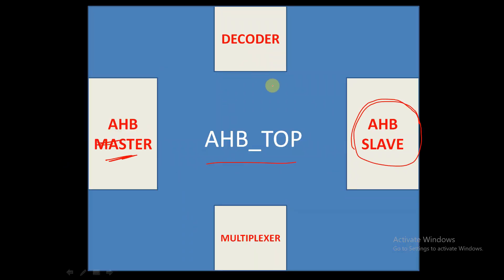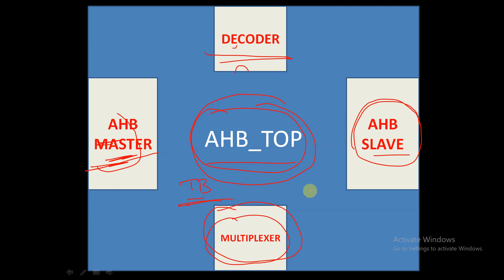Finally, this AHB top module consists of an AHB master, AHB slaves, decoder, and multiplexer. We will write test benches for the AHB master alone, AHB slave alone, the decoder multiplexer, and for the whole module. We will write the stimulus using the test bench and check that the data is being driven according to the AHB protocol.